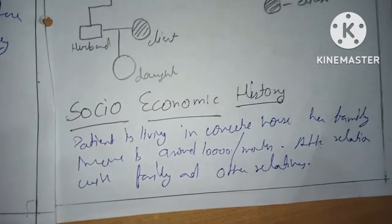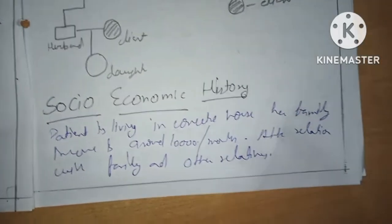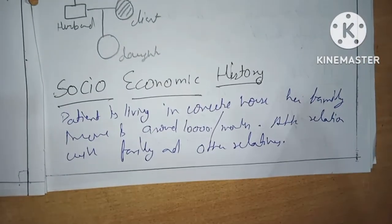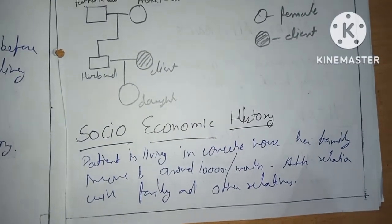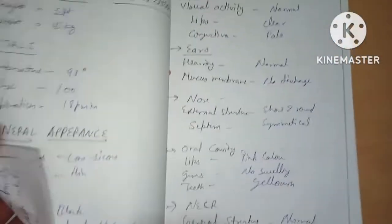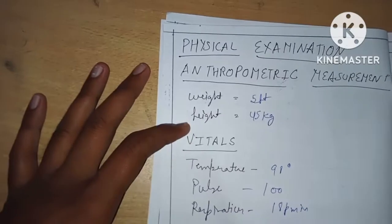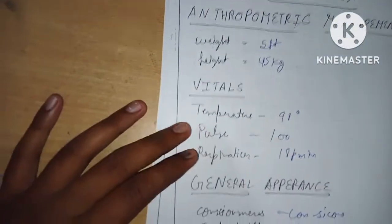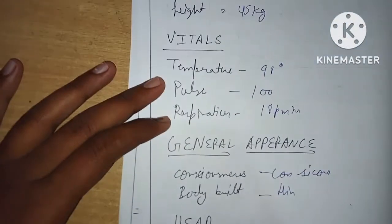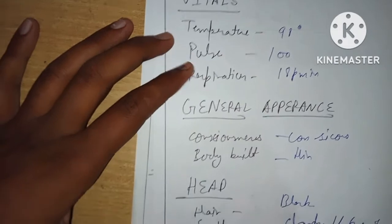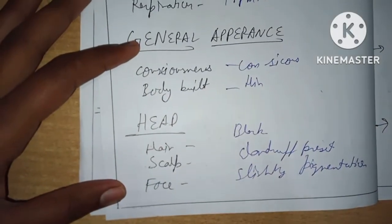Next is socioeconomic history: the patient is living in a concrete house, her family income is 10,000 per month, along with family and other relations. Then comes physical examination: anthropometric measurements including weight, height, vital signs, temperature, pulse, respiration, general appearance, and consciousness.